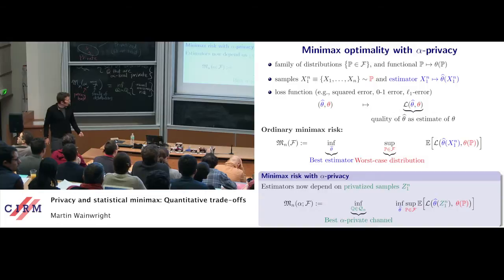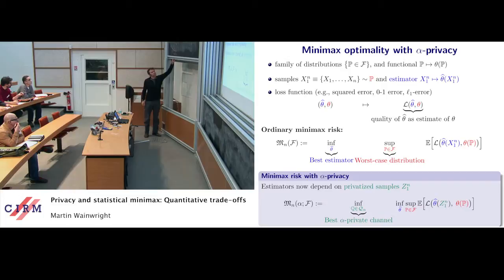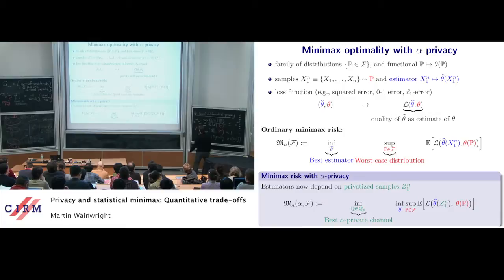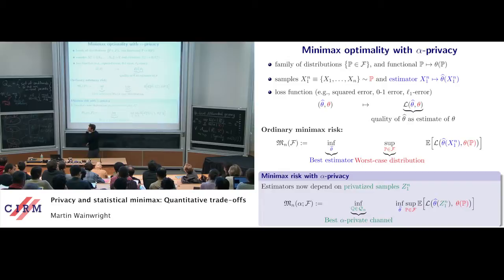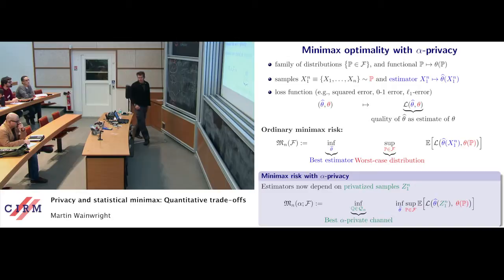That's what we're going to study for the rest of the talk. If we took alpha equal to infinity, there's no notion of privacy and this degenerates to the ordinary risk. We're interested in alpha in the region zero to one, where there's a significant privacy constraint. The alpha-private minimax risk should blow up as alpha goes to zero — we'll see that it does — and it also depends on N, the sample size, and on F, the family of distributions.